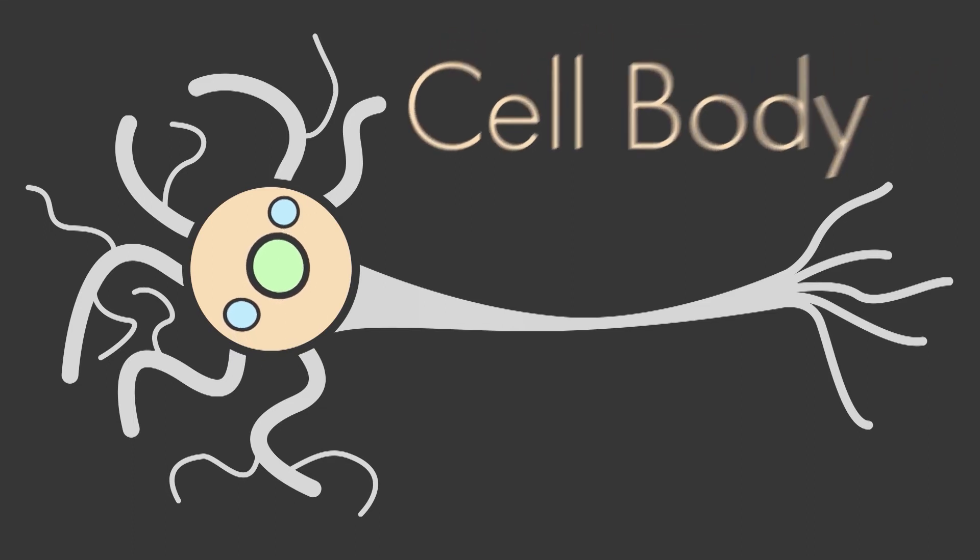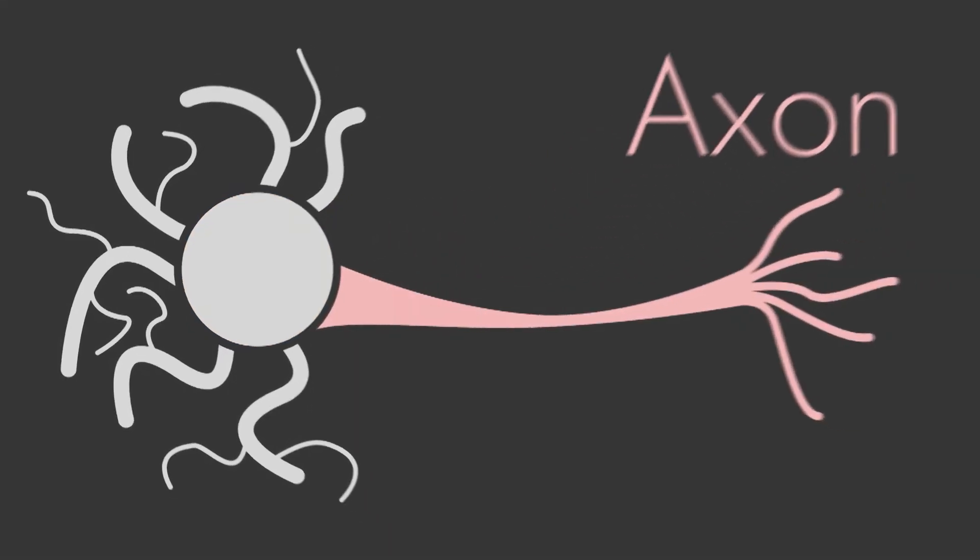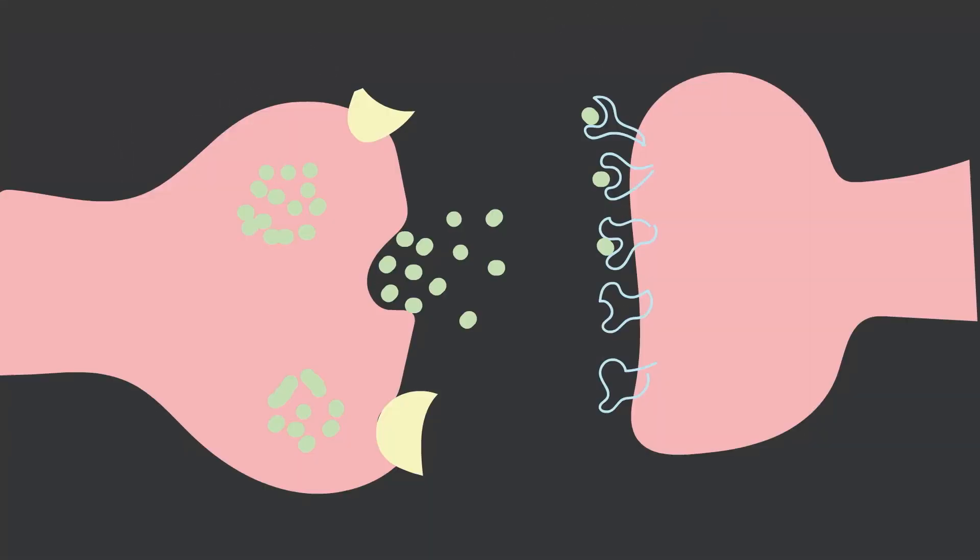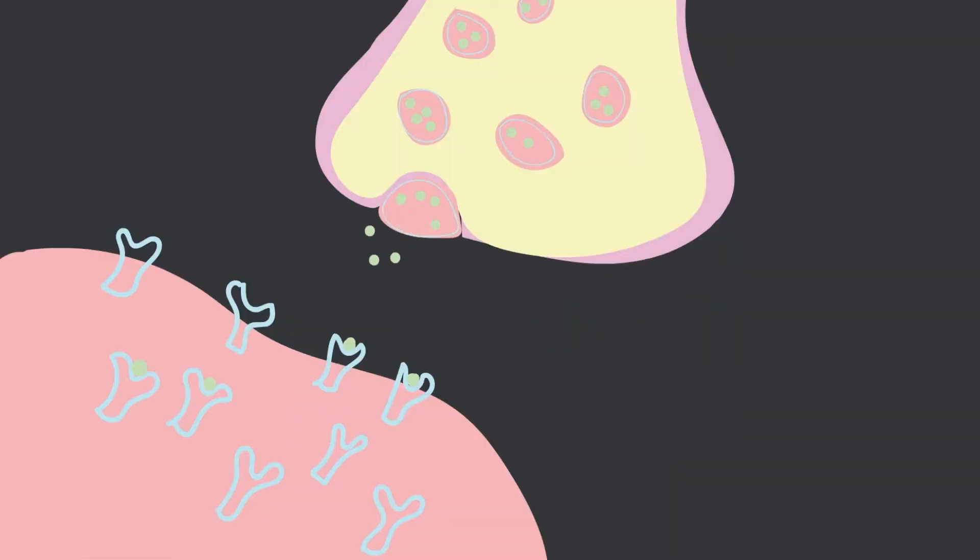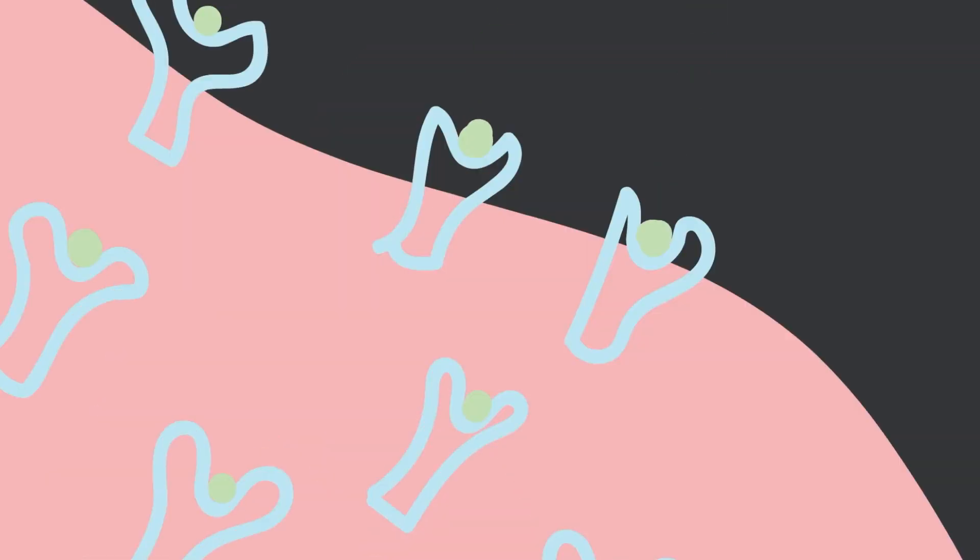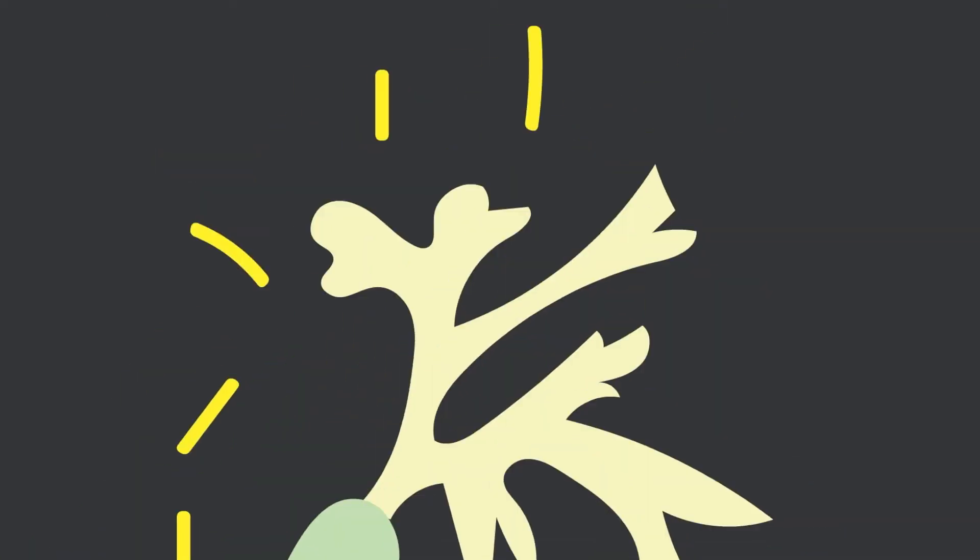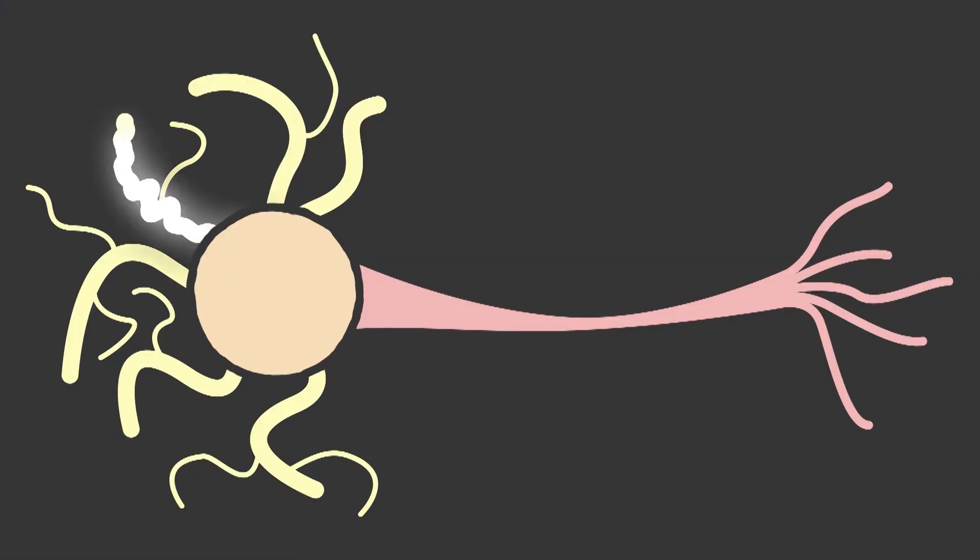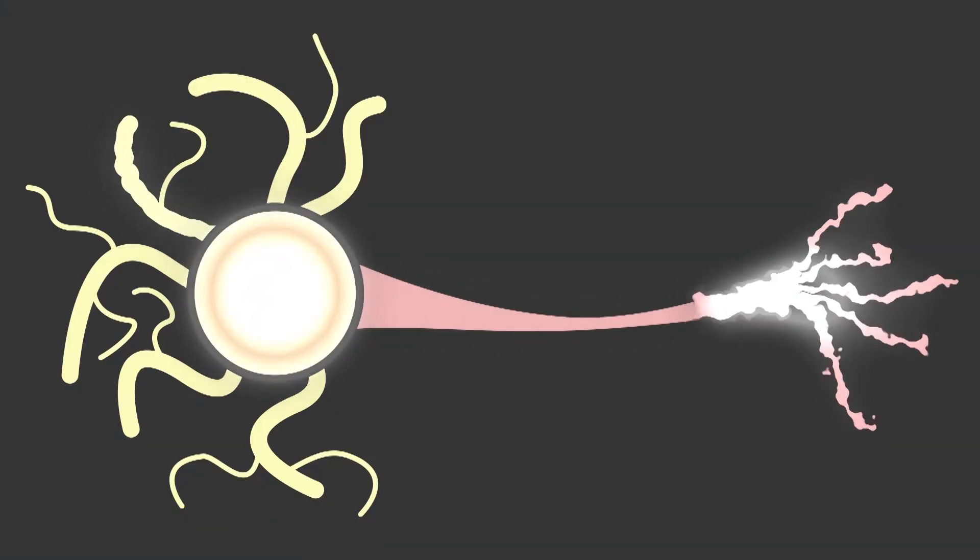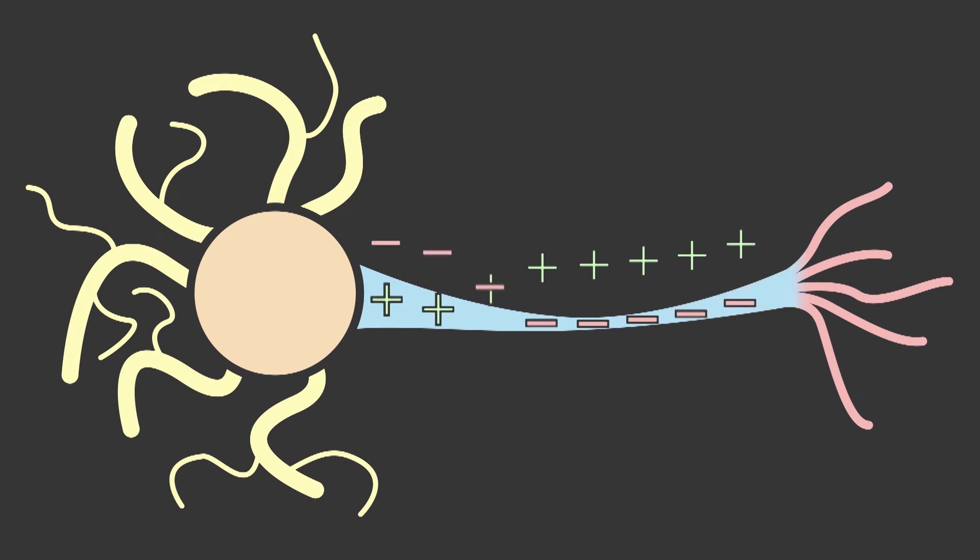The axon, finally, is the output side of the neuron. An action potential is generated and travels along the axon to the terminal branches by means of a change in polarity across the membrane of the axon.